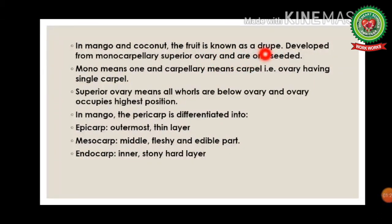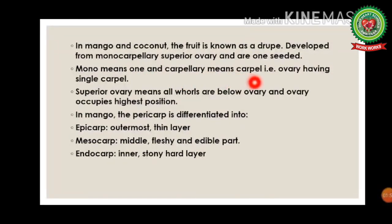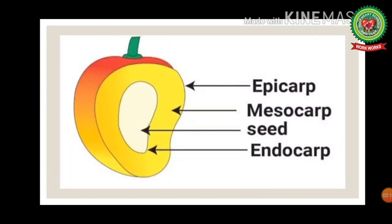Examples of drupes include mango, cherry, and almond. They develop from a monocarpellary superior ovary and are one-seeded. Monocarpellary means the ovary contains a single carpel. Superior ovary — also called hypogynous — means all whorls are below the ovary and the ovary occupies the highest position.